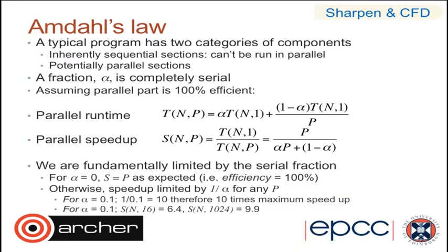If 10% of our code is serial, then the maximum possible speed-up is 1/alpha = 10, which means running on more than 10 processors is really pointless. Amdahl was quite negative about this: even if just 1% of your code is serial, you can only ever usefully run on 100 processors, and running on more than 100 will be pointless. So does Amdahl's law mean we can't actually utilize large HPC machines with hundreds of thousands of processors?